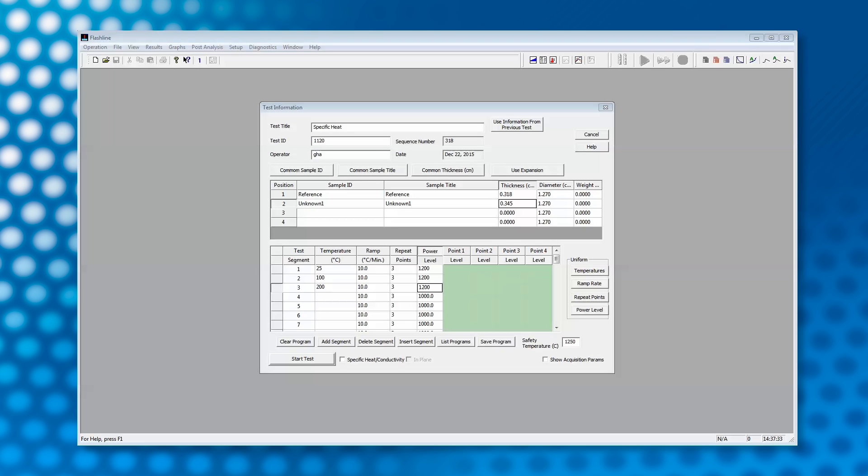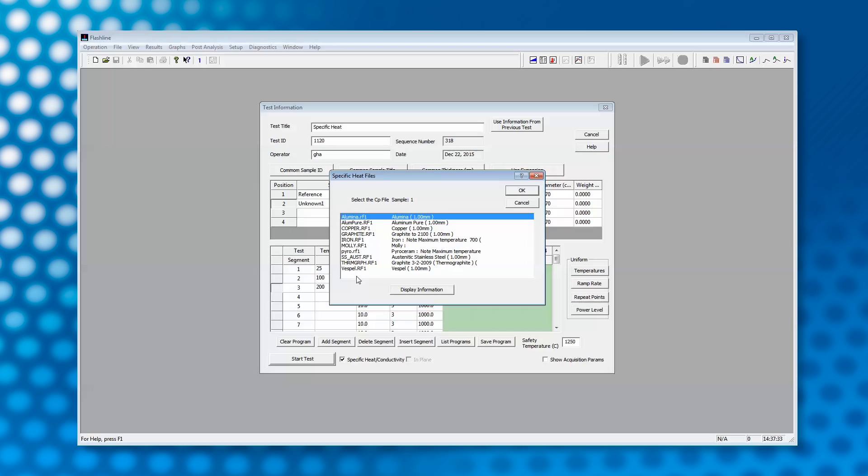After we save the density file, we can start the test. In the test setup page, after entering the test information and temperatures, we check the specific heat box and the software will prompt us to choose the specific heat and density files for the reference sample and the density file for the unknowns.